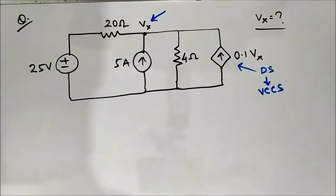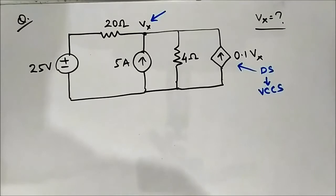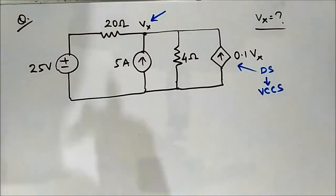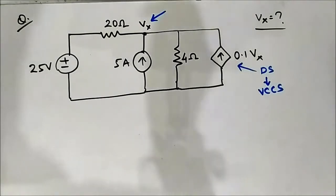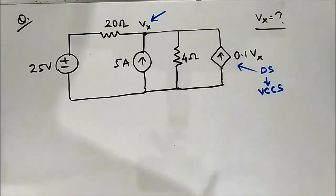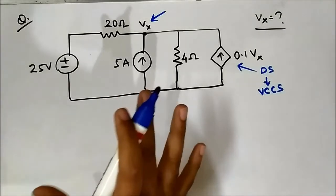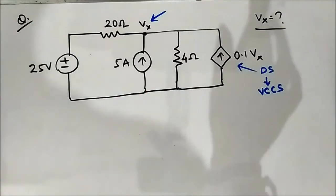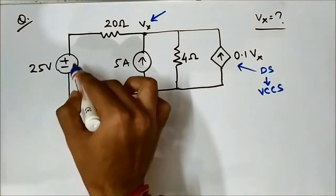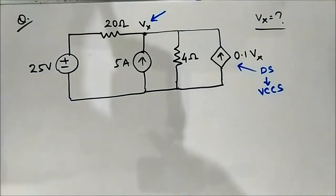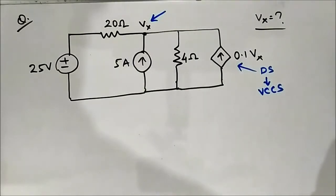If we apply nodal analysis, we can easily find Vx with less effort, but we will find it using superposition theorem. The basic principle of superposition theorem says you have to consider one independent source at a time while deactivating the other independent sources.